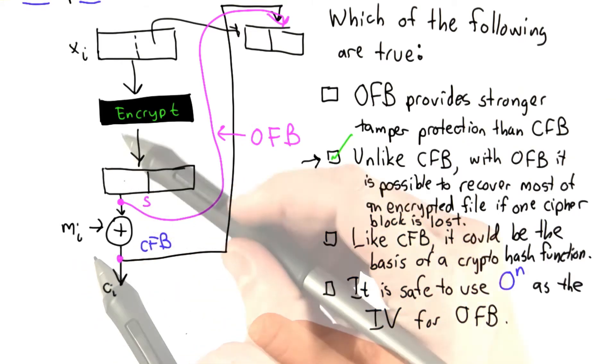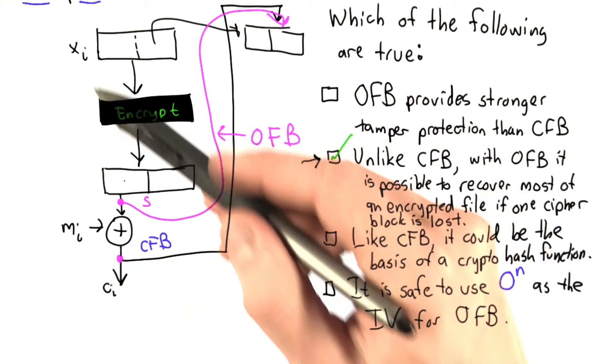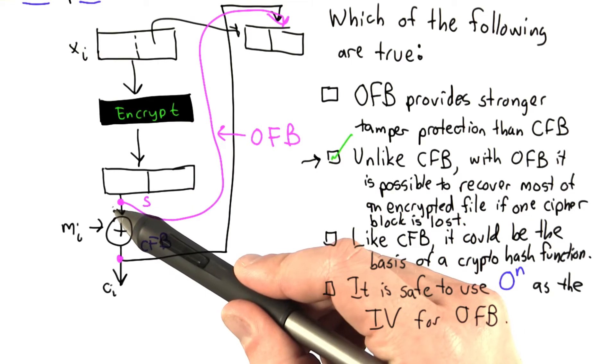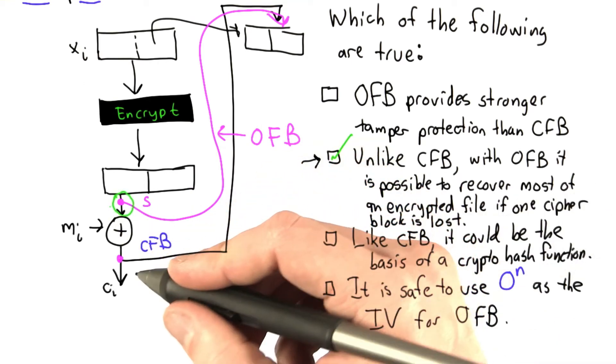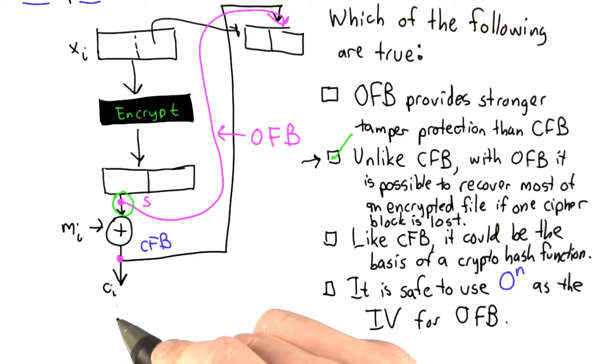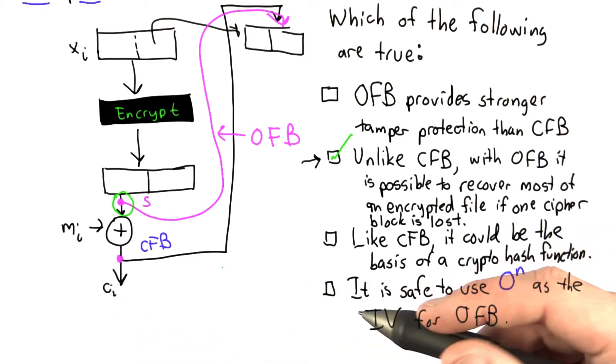We can see this because in the decrypt process, we need to calculate this input into the XOR, and that can be calculated without knowledge of C1, C2, C3, or any of the other cipher messages.